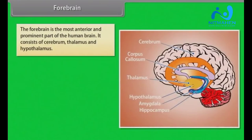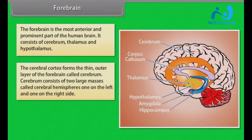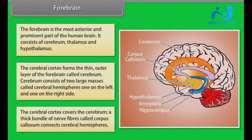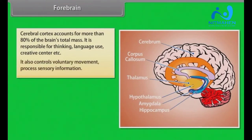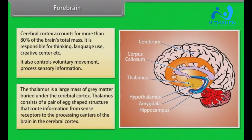The forebrain is the most anterior and prominent part of the human brain. It consists of the cerebrum, thalamus, and hypothalamus. The cerebral cortex forms the thin outer layer of the forebrain called the cerebrum, which consists of two large masses called cerebral hemispheres — one on the left and one on the right. A thick bundle of nerve fibers called the corpus callosum connects the cerebral hemispheres. The cerebral cortex accounts for more than 80% of the brain's total mass and is responsible for thinking, language use, creative functions, voluntary movement, and processing sensory information.